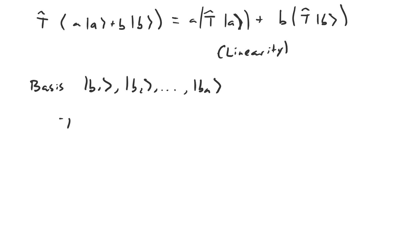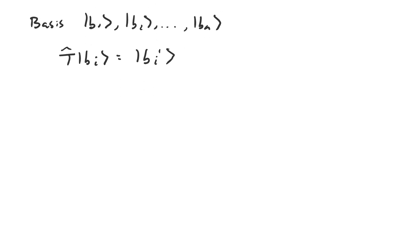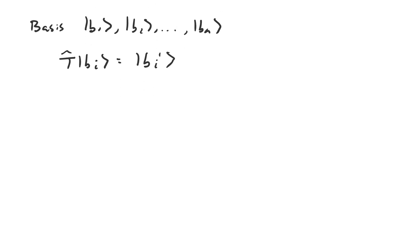Let's say it turns |bᵢ⟩ into |b'ᵢ⟩, which itself will be a linear combination of these basis vectors. So we know how T̂ acts on the basis vectors. Does that give us enough information to know what T̂ will do to an arbitrary vector in this space, say |v⟩?